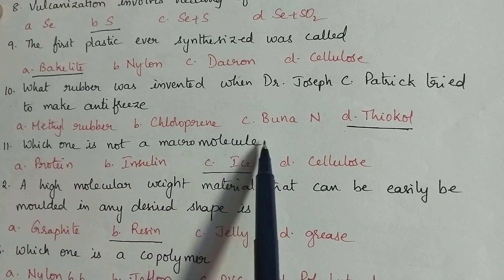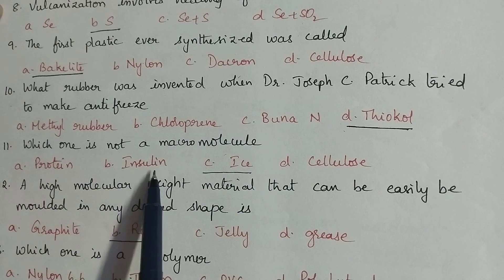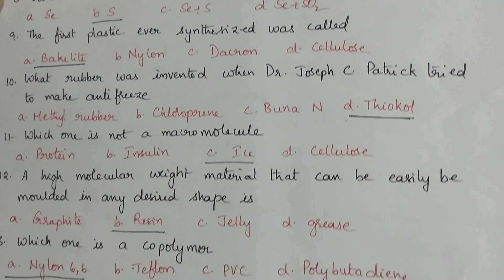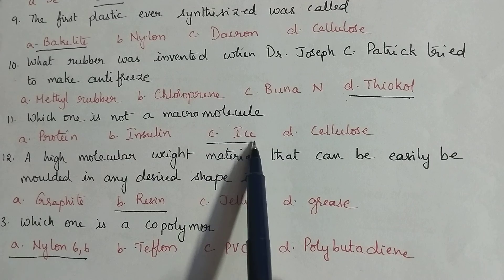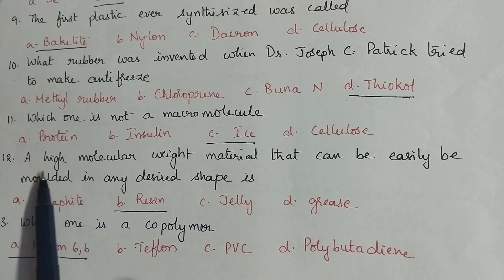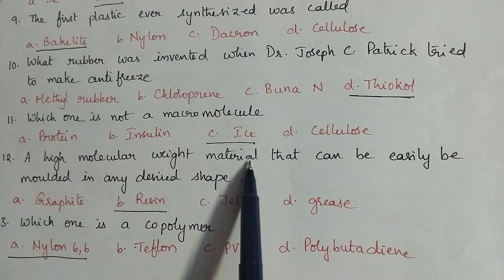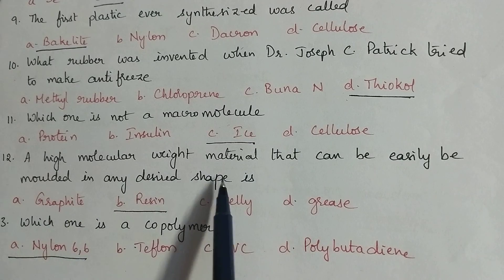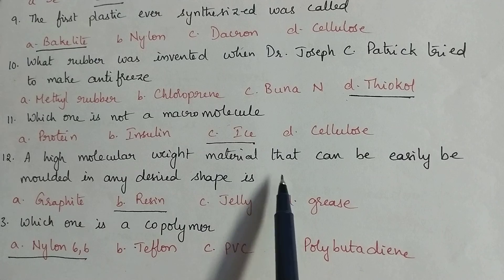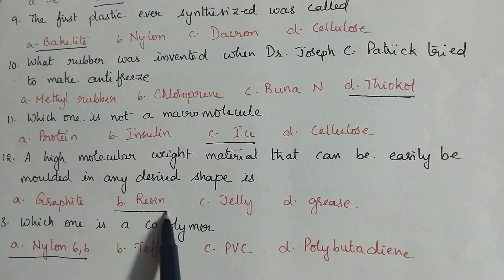Which one is not a macromolecule? Proteins, insulin, cellulose comes under natural polymers and ice is not a macromolecule. A high molecular weight material that can be easily molded in any desirable shape is called plastic. Raw plastic is called as resin, so in this case resin is the right option.